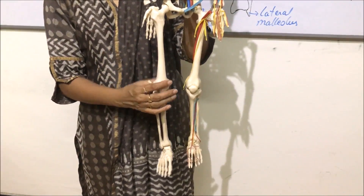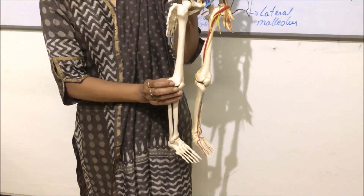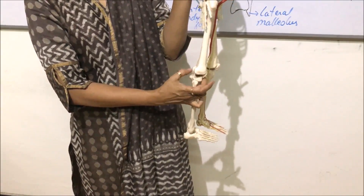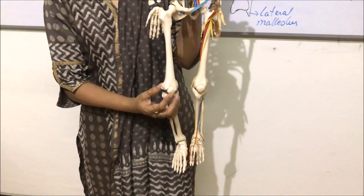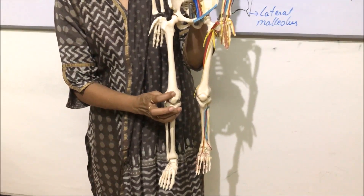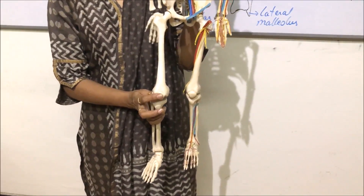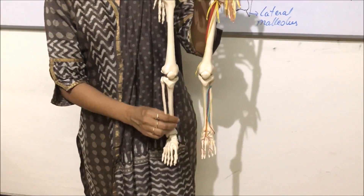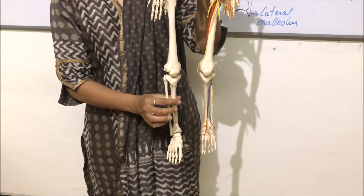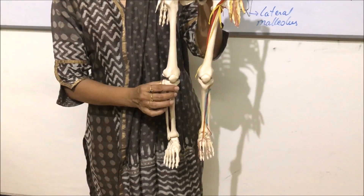The lower end of the femur has two structures — these are the semicircular condyles. Anteriorly you can find a flat bone attached here; there is a depression, and the patella, this small piece, is the knee cap or patella. The lower leg has two bones: the slightly thicker one is the tibia and the thin bone is the fibula.